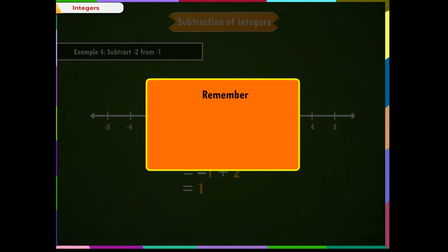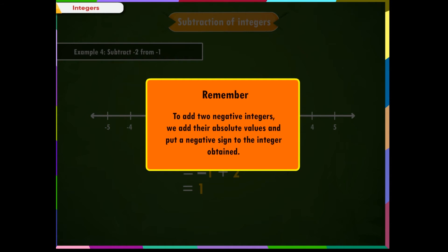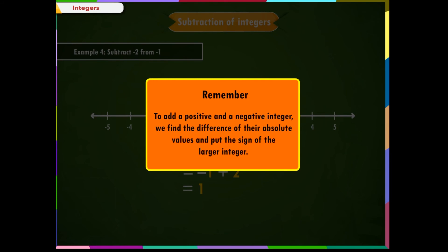Remember the sign rules for addition and subtraction. To add two positive integers, we add them like natural numbers. To add two negative integers, we add their absolute values and put a negative sign to the result. To add a positive and a negative integer, we find the difference of their absolute values and put the sign of the larger integer.